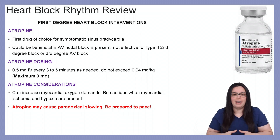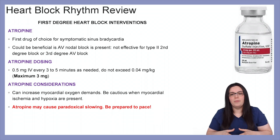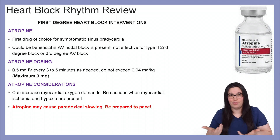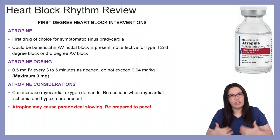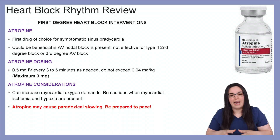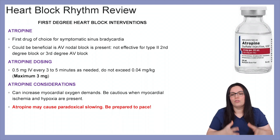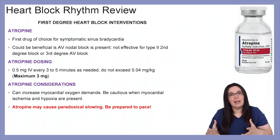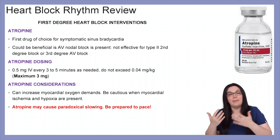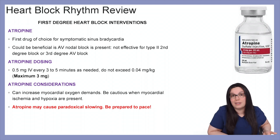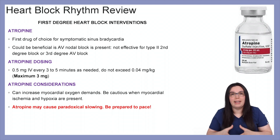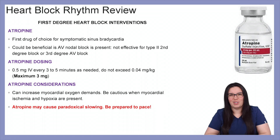Considerations for atropine: it can increase myocardial oxygen demand, so we have to be cautious if there is myocardial ischemia or hypoxia present when providing this to our patients. It's also important to note that atropine can cause paradoxical slowing — sometimes instead of bringing the heart rate up, it can actually make it worse and slow it down further. So we need to prepare to pace these patients in case that paradoxical slowing does occur.